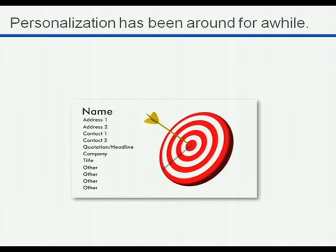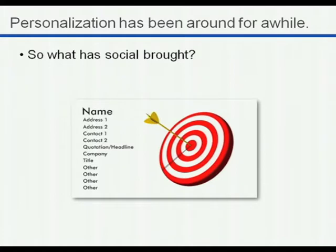Personalization has been around for a while. You've known some set of attributes about your customers — name, address, contact — for quite a while through other methods. The behavioral attributes and site browsing attributes of your customers have been available with basic pixeling, cookies, and retargeting. So the question is: what has social brought to the game? Some form of this data, perhaps more inferred rather than declared, is available — but what has social brought from an explicit retargeting standpoint for a marketer?